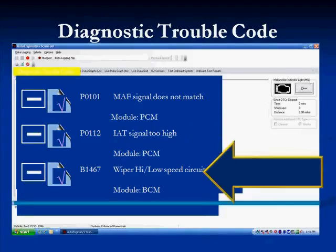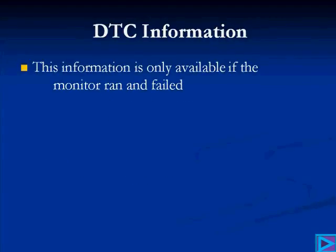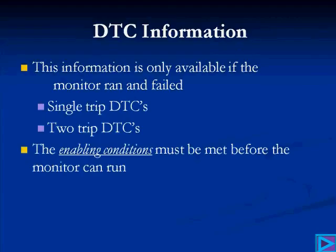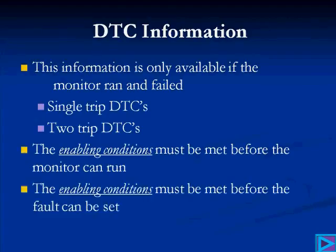This particular B1467 isn't a drivability concern — it's a wiper high-low speed circuit fault, and it was generated in the BCM, not the PCM. This information is only going to be available — diagnostic trouble codes are only going to be available — if a monitor ran and failed. It can be a single-trip DTC or a two-trip DTC. The enabling conditions must be met before that monitor can run, and before the fault can be set.